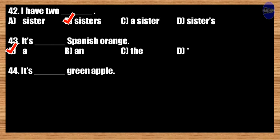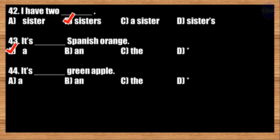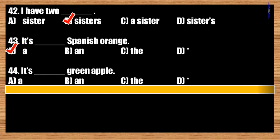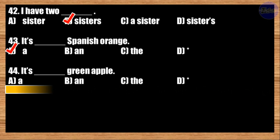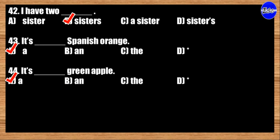Number forty-four: It's blank green apple. A: a; B: an; C: the; D: blank. The best answer is option A. It's a green apple.